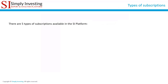There are five types of subscriptions available in the Simply Investing platform. The SI Course account is available to anyone who purchases the Simply Investing online course. This account does not have access to any of the platform features — it only gives you access to the raw financial data for US and Canadian stocks. You can then use the financial data to fill in the Google Sheet which comes with the course, and it allows you to apply the 12 rules of Simply Investing yourself.